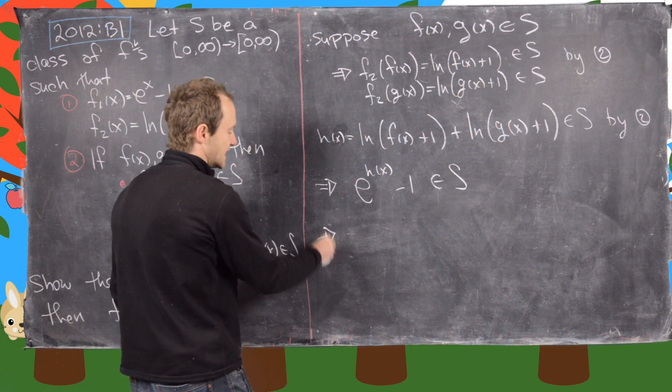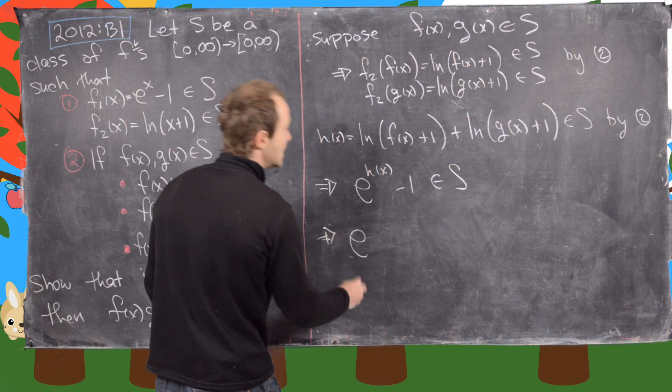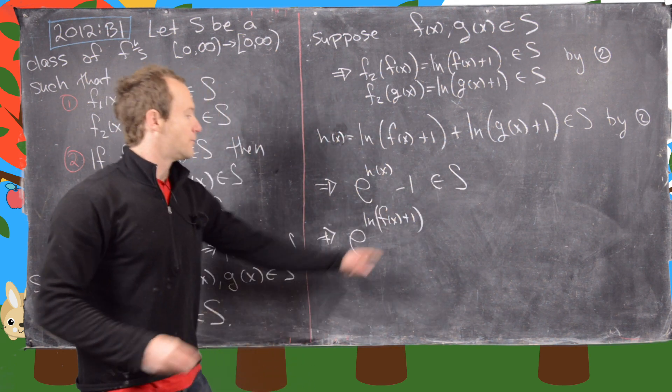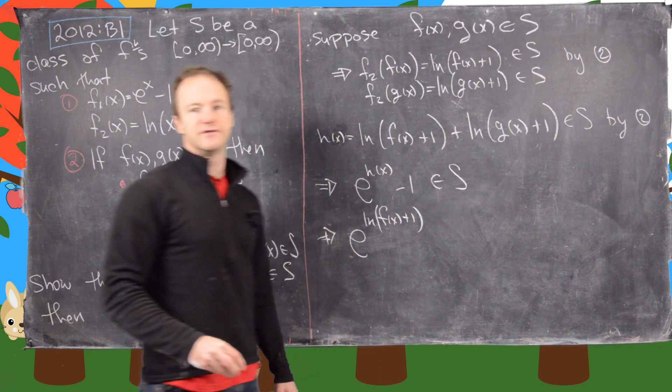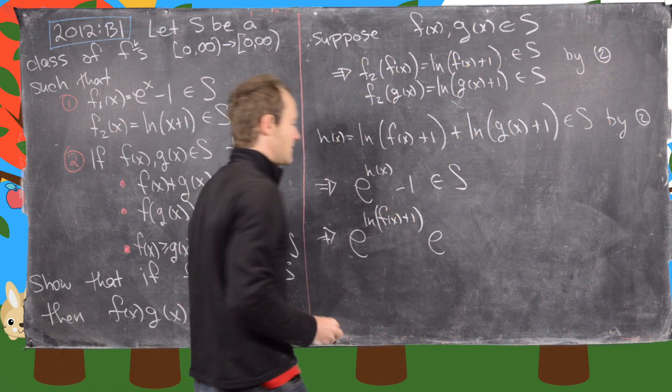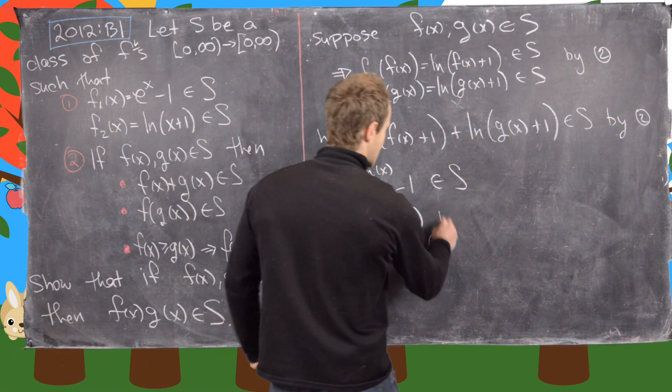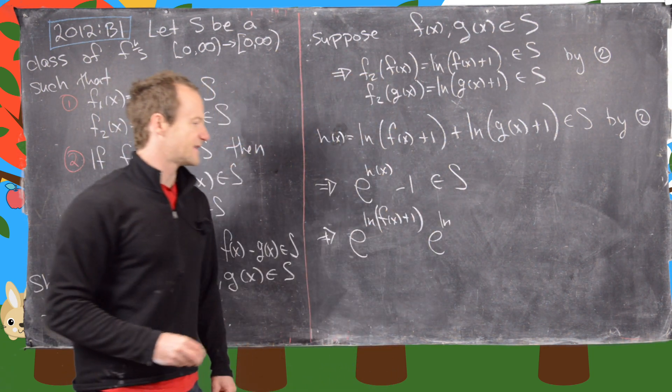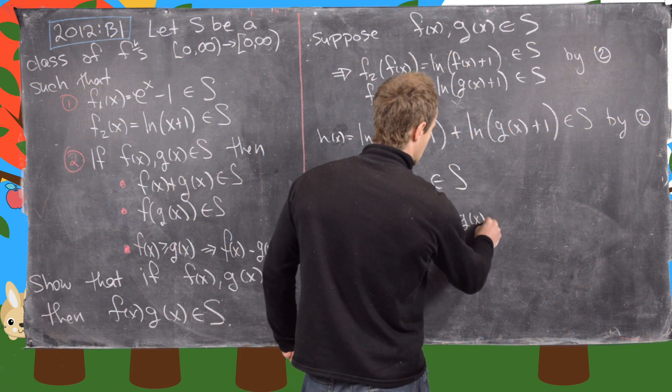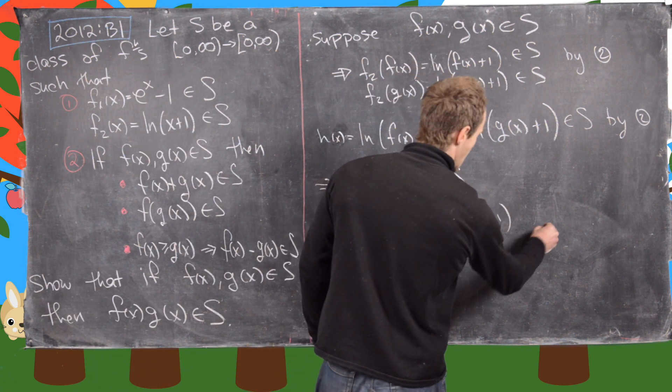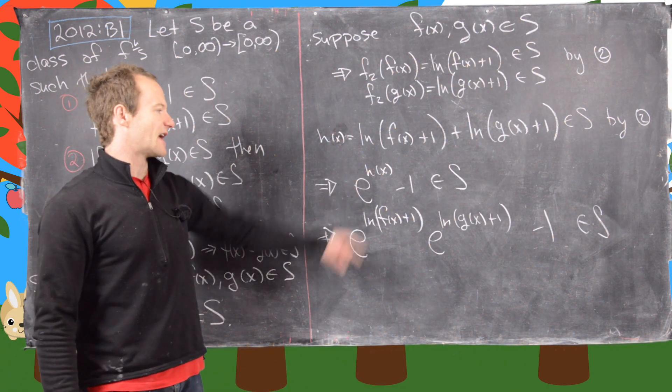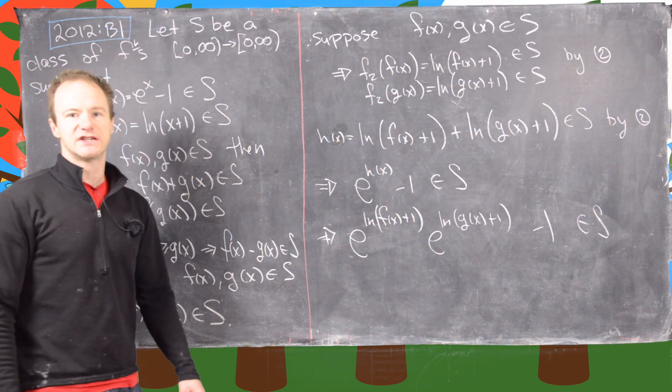But now that's going to be exactly equal to e to the natural log of f of x plus 1 plus natural log of g of x plus 1. But now I can use exponent rules to turn that sum inside the exponent into a product. So that's going to be e to the natural log of f of x plus 1 times e to the natural log of g of x plus 1 minus 1. And so that's all in S. So that's exactly e to the h of x minus 1 where we defined h of x up here.